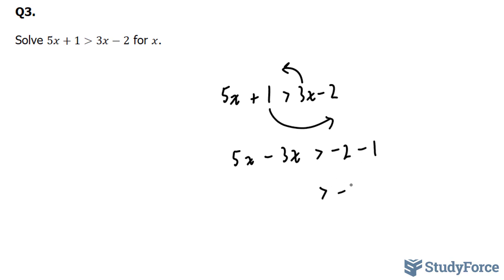On the right side, we have negative 3. And on the left side, we have 2x. Divide both sides by this 2. It's positive, so the inequality stays the way it is. x must be greater than negative 3 over 2, which is equivalent to negative 1.5.